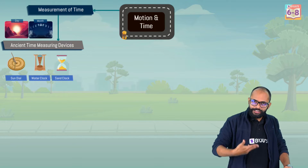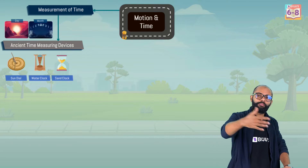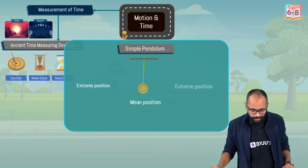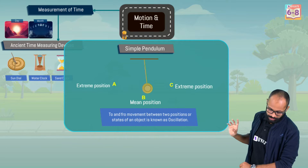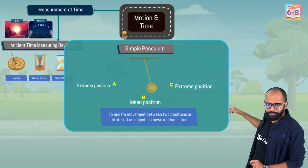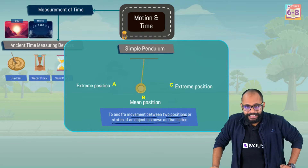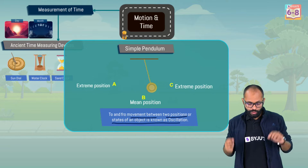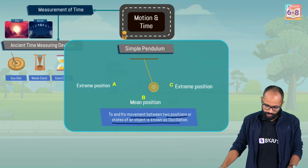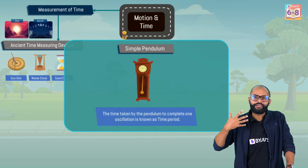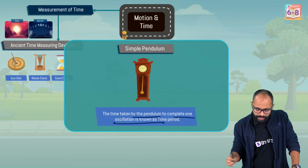Slowly we started thinking about how we can get a better sense of time measurement. That's where the story of Galileo comes. He was in a palace and saw a chandelier — and slowly, slowly, we move towards the simple pendulum. It has three positions: two extreme positions and a mean position. This pendulum takes the same path again and again. To and fro movement between two positions or states of an object is known as oscillation. Simple pendulum shows this to and fro motion. You might have seen this in a grandfather clock.